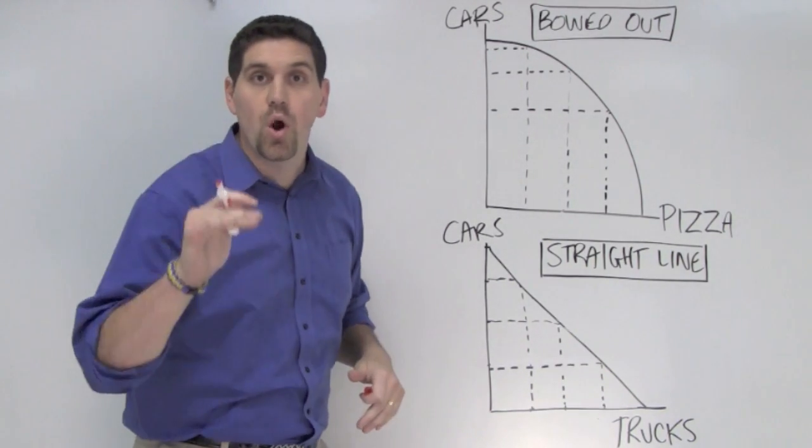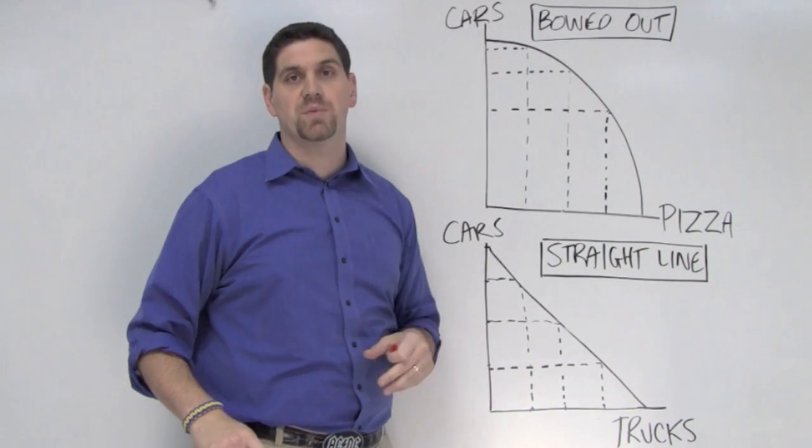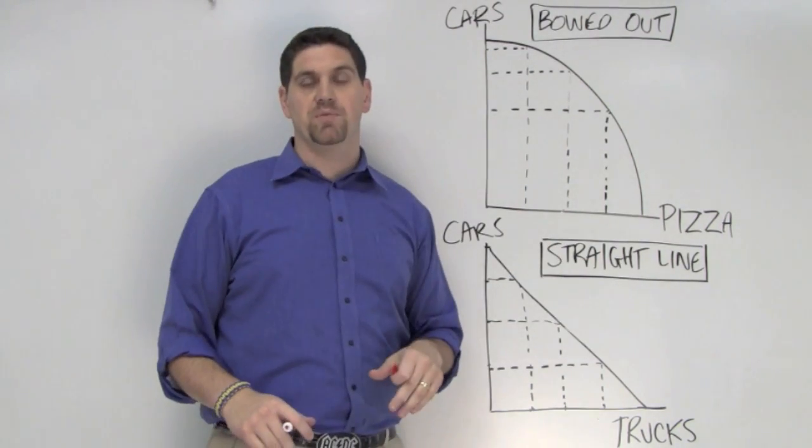Okay, the AP test is going to want to make sure that you know the difference between a bowed out production possibilities curve and a straight line production possibilities curve.